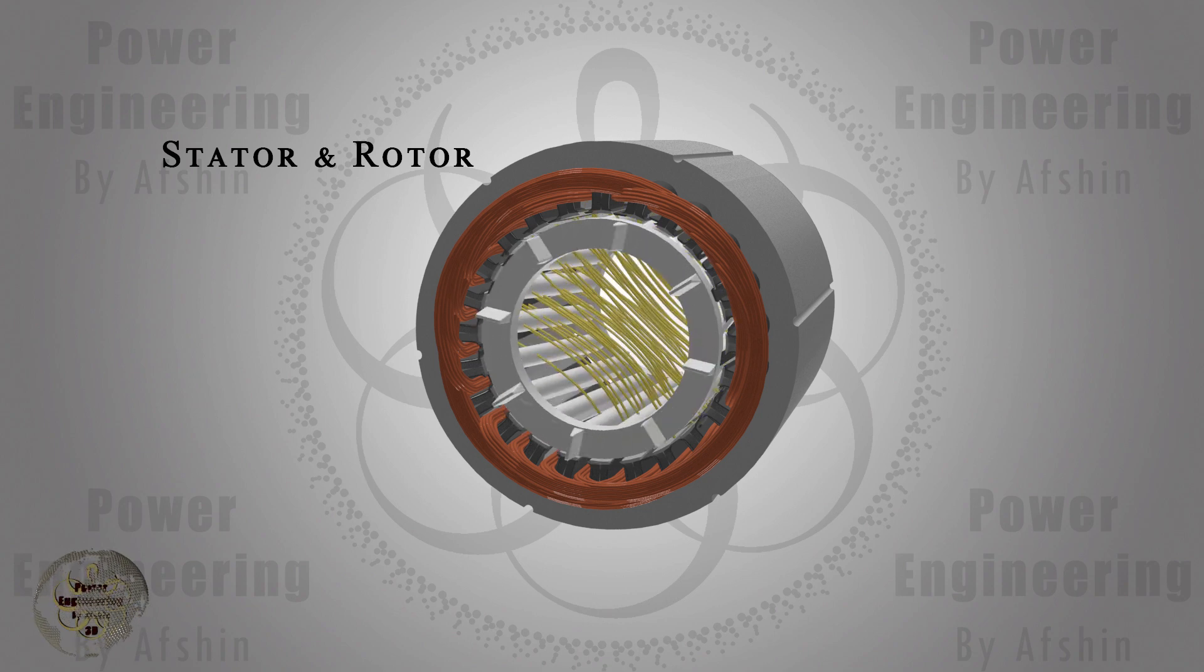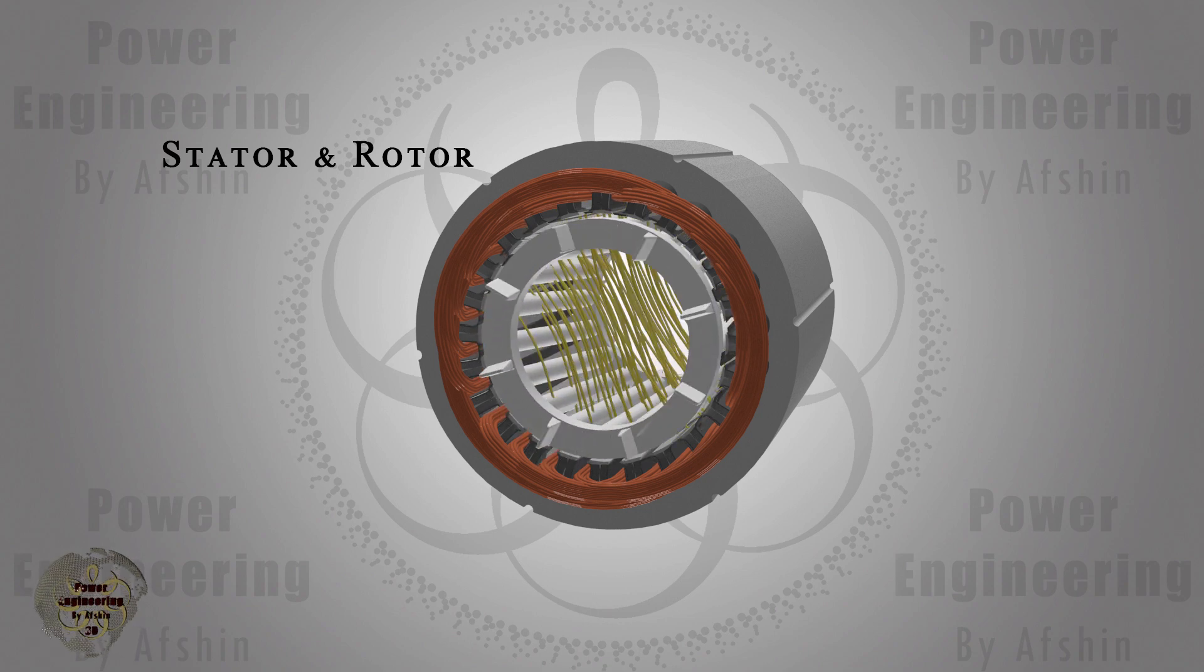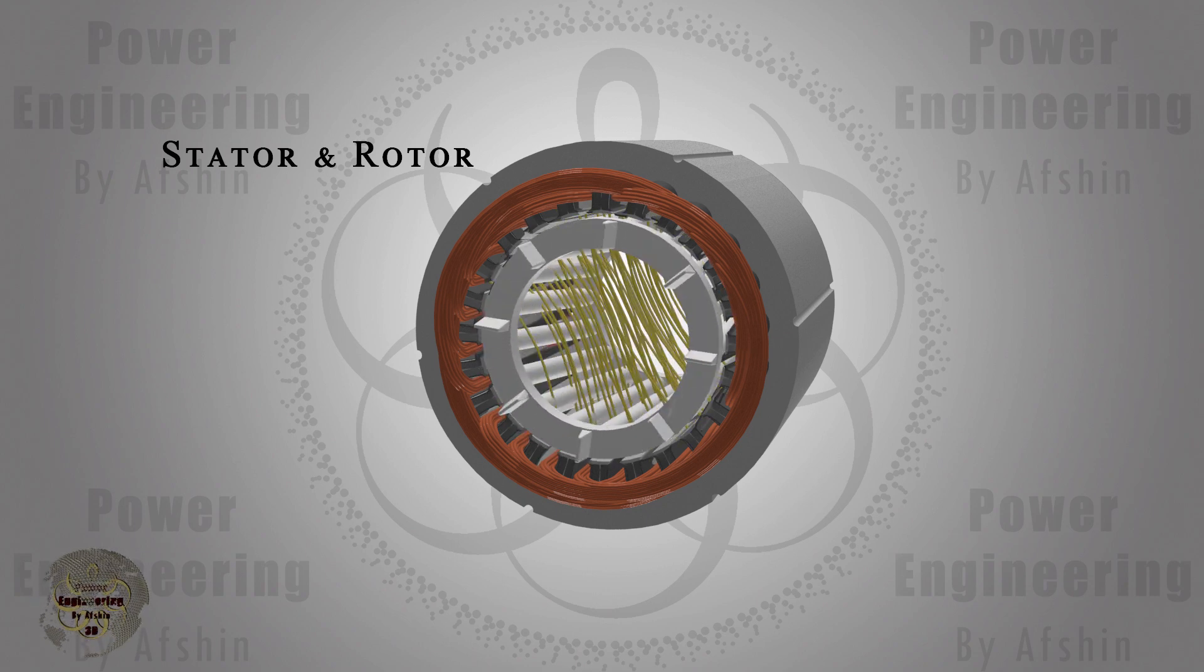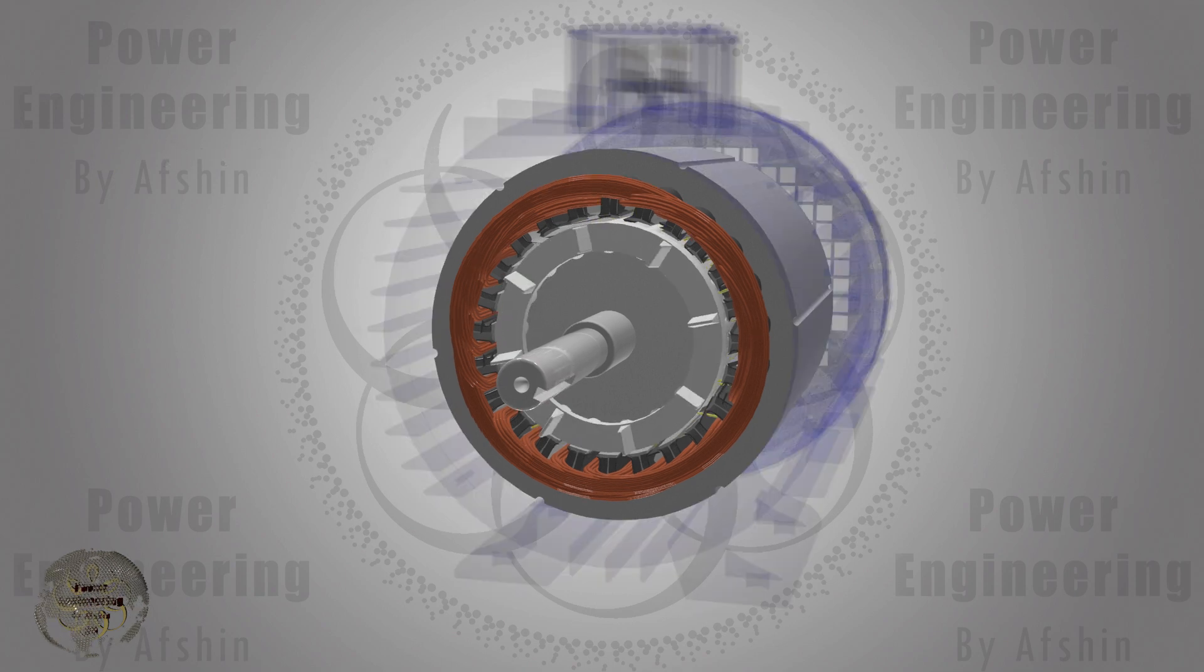The rotating field extends through the air gap between the stator and rotor inducing voltage and generating current, which in turn produces torque, similar to what you observed in the previous section. Induction motors typically use iron cores for both the rotor and stator to increase the magnetic field strength, resulting in greater torque output.